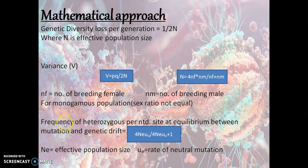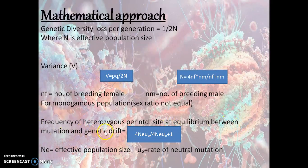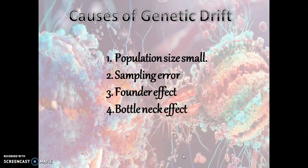This formula applies to monogamous populations where sex ratio is not equal. One more formula, previously asked in the CSIR Life Sciences examination: the frequency of heterozygosity per nucleotide site at equilibrium between mutation and genetic drift is 4·Ne·μ₀ divided by (4·Ne·μ₀ + 1), where Ne is the effective population size and μ₀ is the rate of neutral mutation.